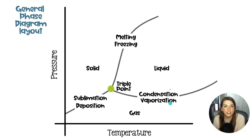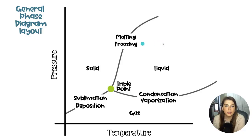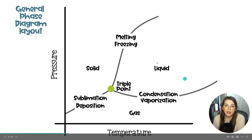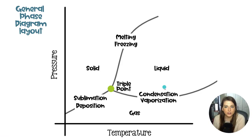Talking again about the phase changes: if you are in the solid region and you increase the temperature, you would be sliding on the x-axis, and in that case, solid to liquid — you would be melting your sample. If you started in the liquid and you were decreasing the temperature, you would slide across this way and you would be freezing. If you have a liquid and you decrease the pressure, you are going to vaporize and your sample will be a gas. If you have a gas and you increase the pressure, you are going to condense to a liquid.